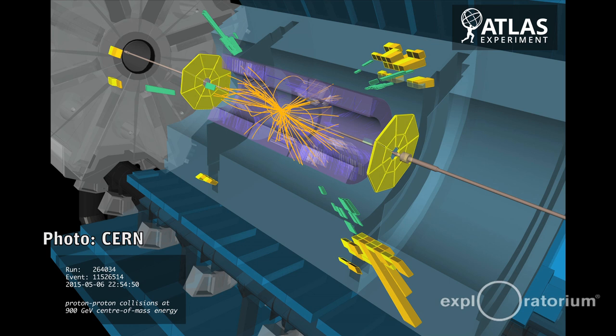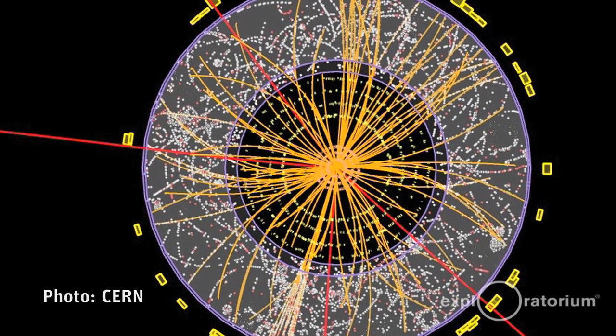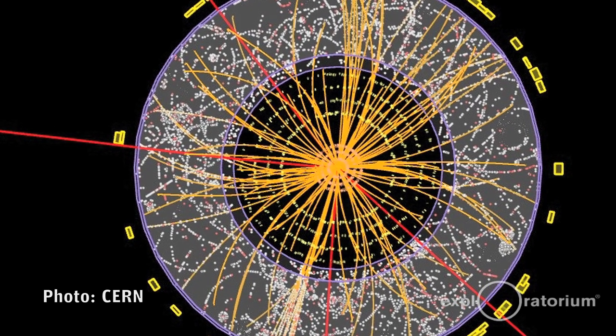In order to do those experiments we need very sophisticated detectors. They're essentially cameras that allow us to image the patterns of radiation that come out in these collisions and by studying those patterns we learn about what's going on.